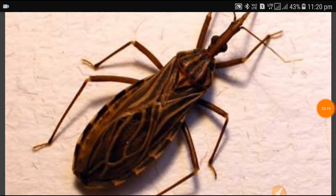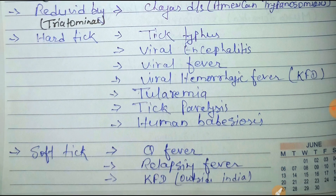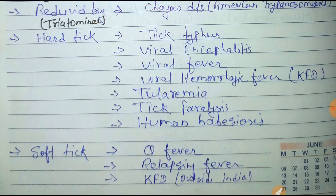The hard tick causes tick typhus, viral encephalitis, viral fever, viral hemorrhagic fever also called KFD (Kyasanur Forest Disease), tularemia, tick paralysis, and human babesiosis. The soft tick causes Q fever, relapsing fever, and KFD but outside India. Images of both hard and soft tick are shown here.